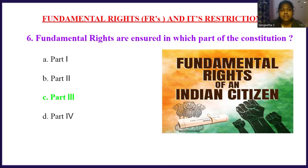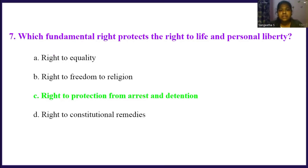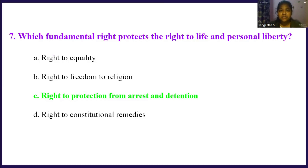Which fundamental right protects the right to life and personal liberty? Option A, right to equality. Option B, right to freedom of religion. Option C, right to protection from arrest and detention. Option D, right to constitutional remedies. The right answer is option C, right to protection from arrest and detention. The fundamental right that protects the right to life and personal liberty is the right to protection from arrest and detention.